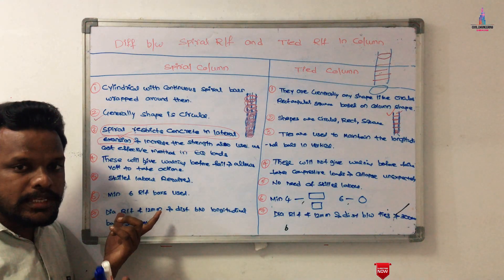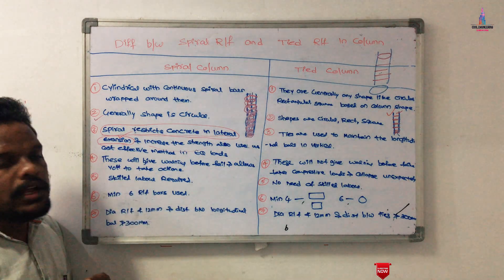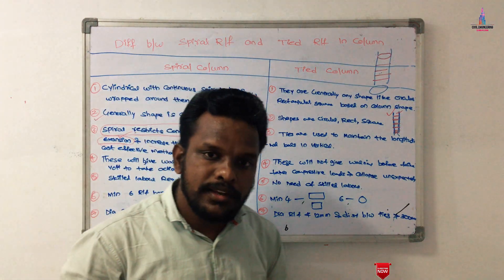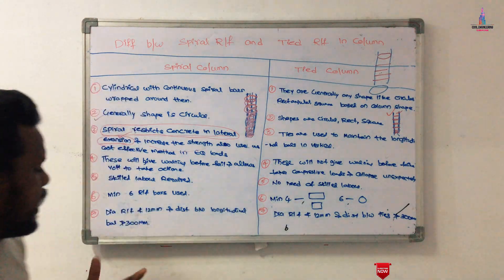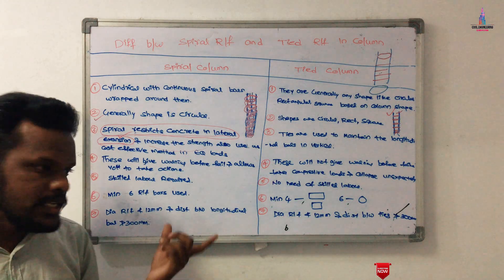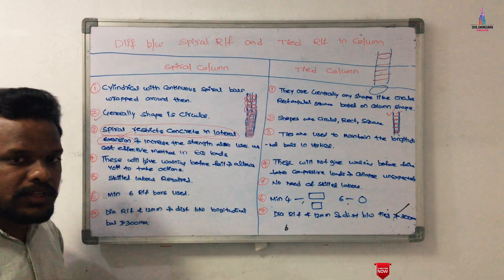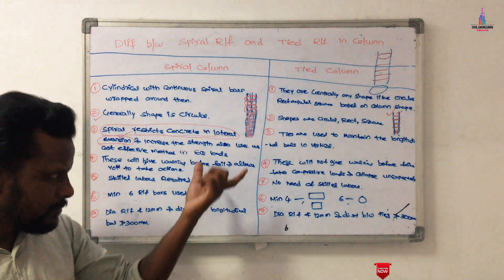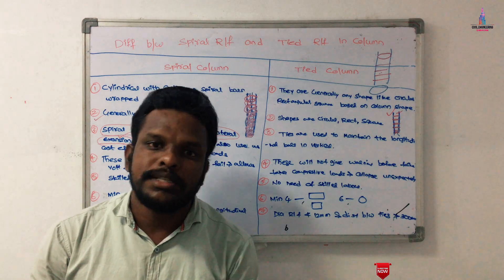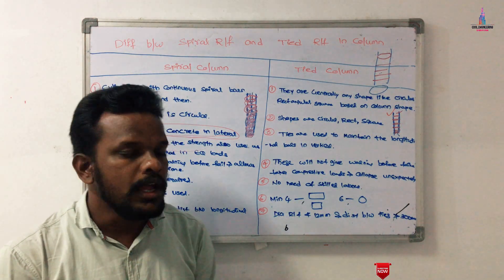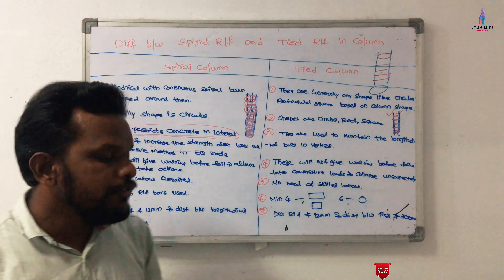As per IS 456 code provisions, spiral reinforcement columns require a minimum of six bars for circular cross sections. For tie reinforcement columns, rectangular and square sections require a minimum of four bars, while circular sections require six bars. The minimum diameter of reinforcement bars for both column types is 12 mm. The distance between longitudinal bars should not be less than 300 mm for spiral columns, and the center-to-center distance between ties should not be greater than 300 mm for tie reinforcement columns.